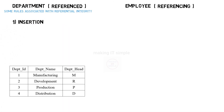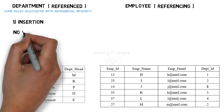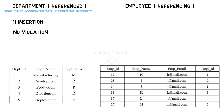First, we will check insertion in the reference table. A new department is added in the company and the record is inserted in the department table. Will this violate referential integrity? The answer is no. There can be a new department where there are no employees working currently. Insertion in the reference table causes no violation — you can insert as many records in the reference table without losing referential integrity.